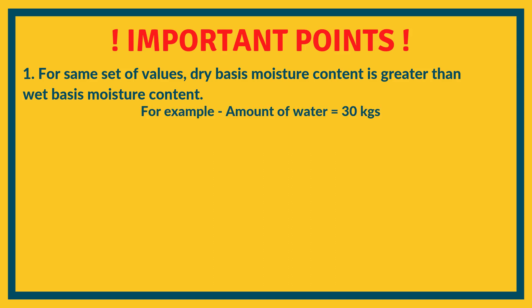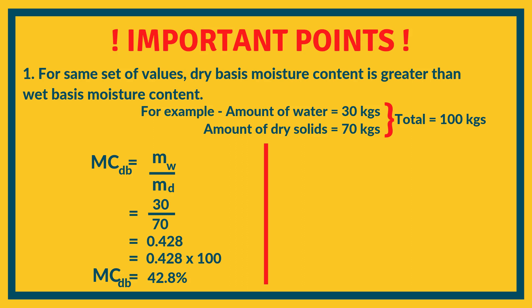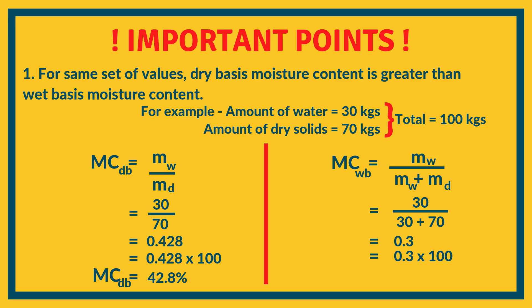For example, the amount of water is 30 kg and the amount of dry solids is 70 kg, so the total weight of the sample is 100 kg. Using the dry basis formula — 30 divided by 70 — the answer is 42.8 percent. For wet basis, using mass of water divided by mass of water plus mass of dry solids — 30 divided by (30 + 70) — we get 30 percent.